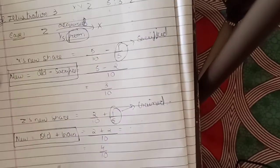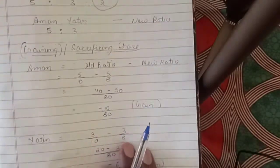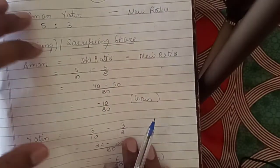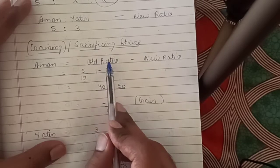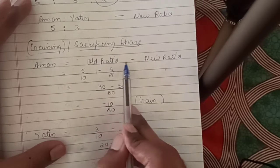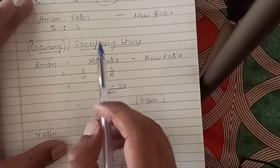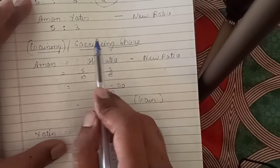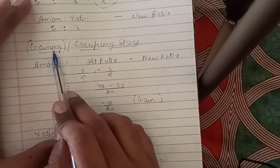Learn just one formula — the one we did yesterday. Old ratio minus new ratio. If the answer is positive, it is sacrifice. If the answer is negative, it is gain. That's the only formula you need to remember; the rest you can derive from it.